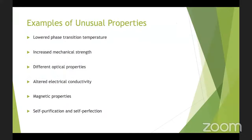Here are some examples of unusual properties of nanoparticles. They have lower phase transition temperatures, increased mechanical strength, unique optical properties, altered electrical conductivity and mechanical properties, and they are able to undergo self-purification and self-perfection. By seeking certain energy states, they tend towards symmetry, which gives the nanoparticle stability to sustain in the environment in which it is kept.